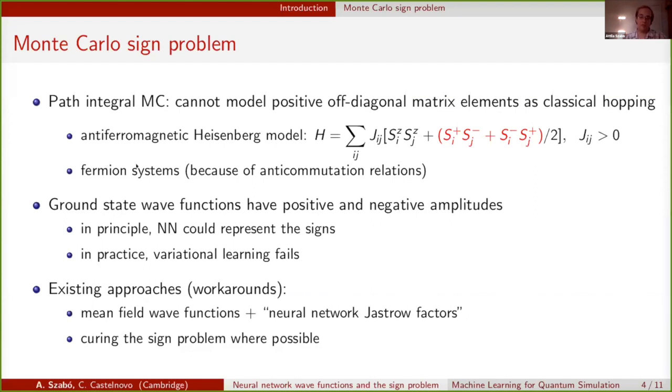The way this connects to our problem, which is merely predicting what the ground state wave function is going to be, is that in the same sign-problematic wave function, the ground state has both positive and negative amplitudes. Neural networks in principle should be able to learn these signs, but what we find in practice is that when we try to learn it in variational Monte Carlo, it fails. The optimization either blows up or it just fails to converge to a non-trivial sign structure.